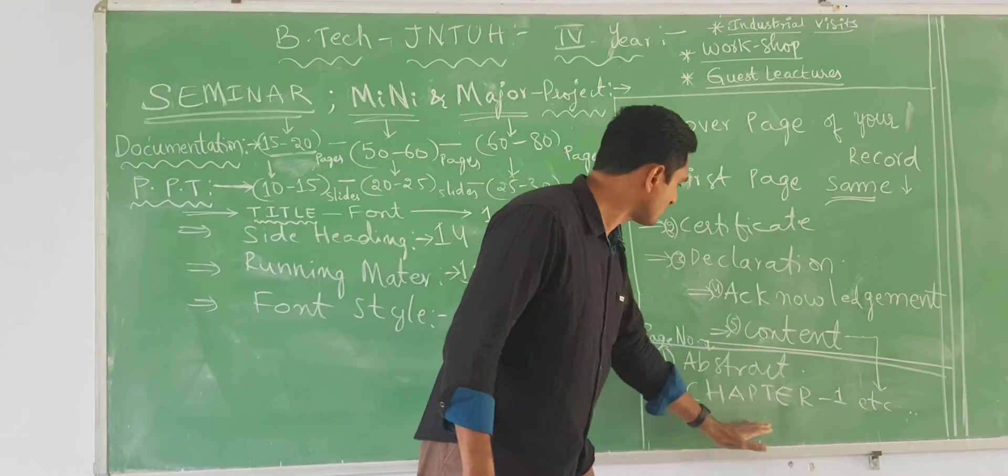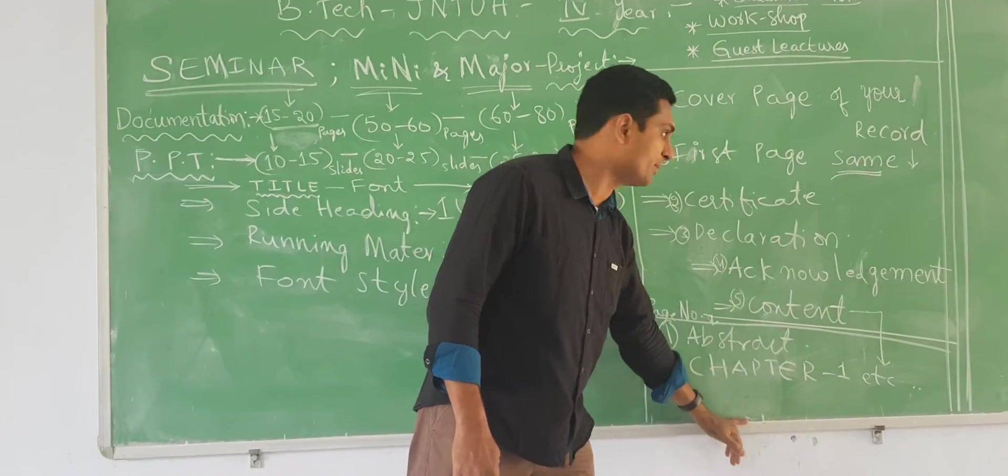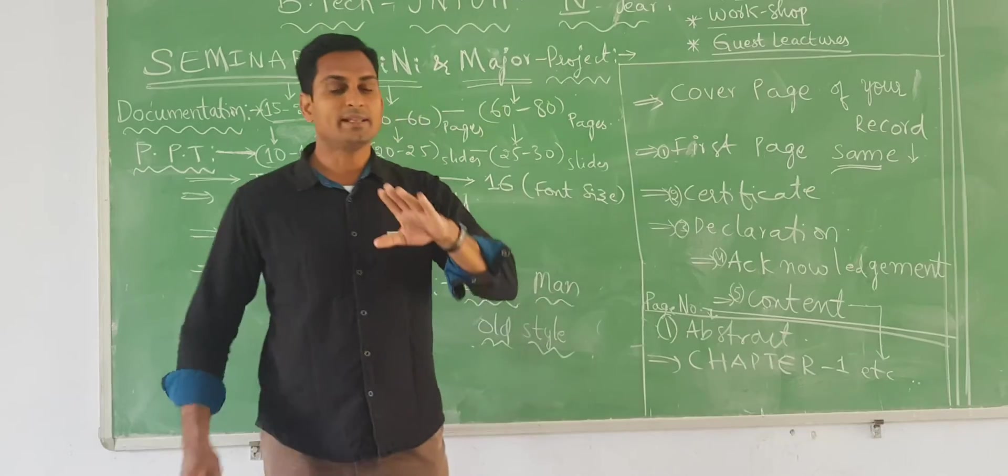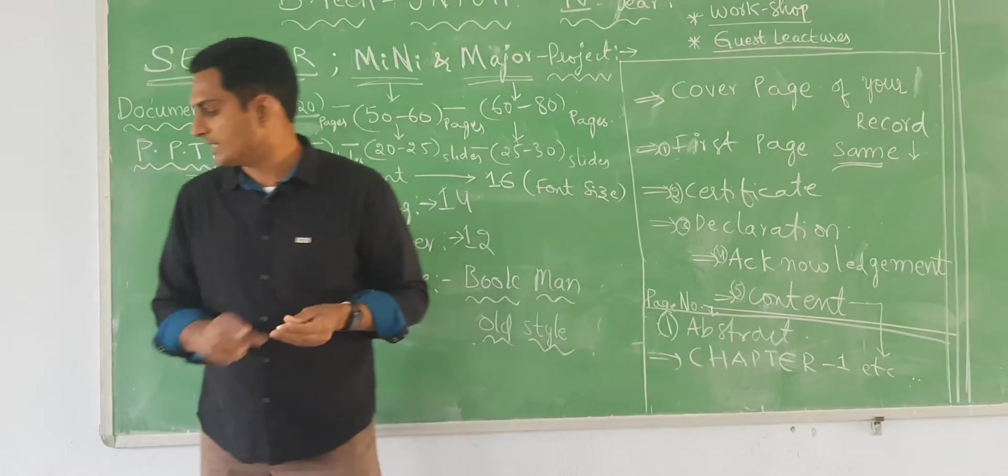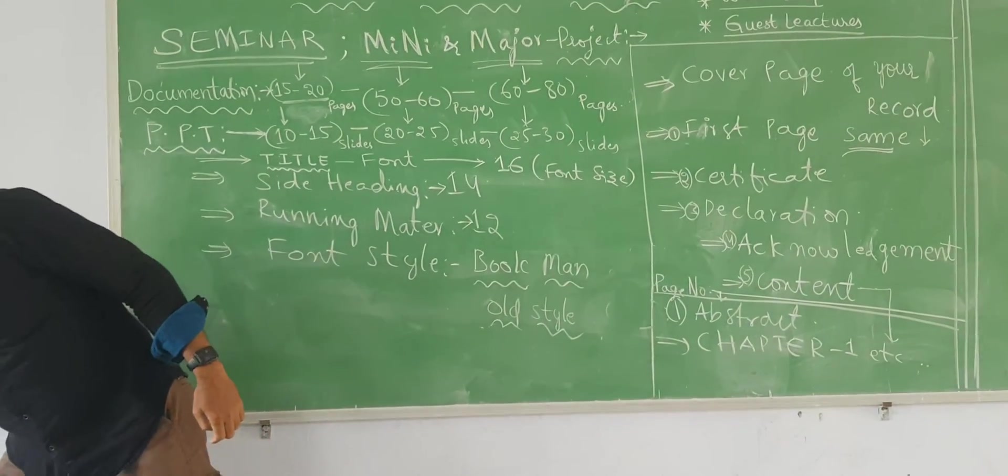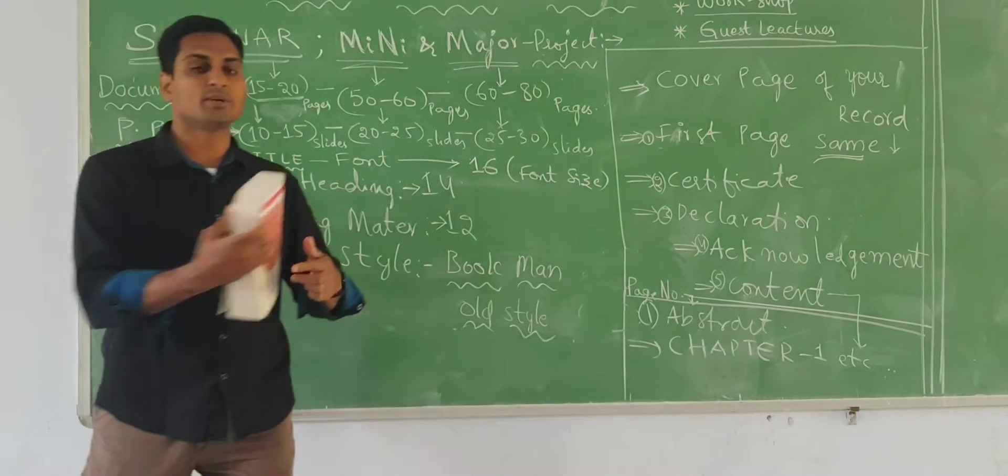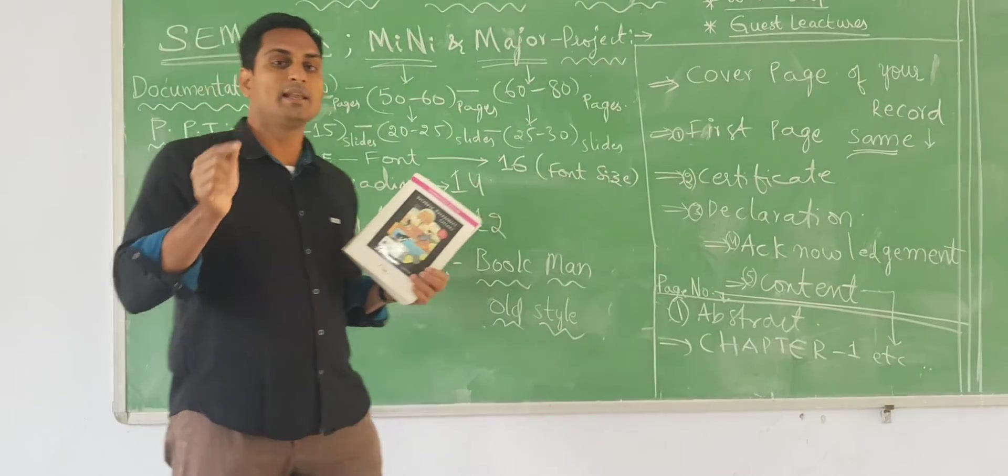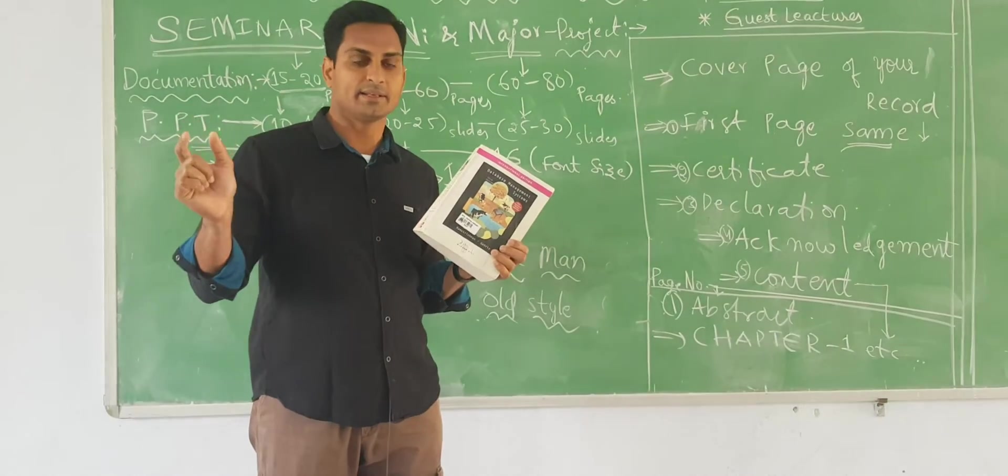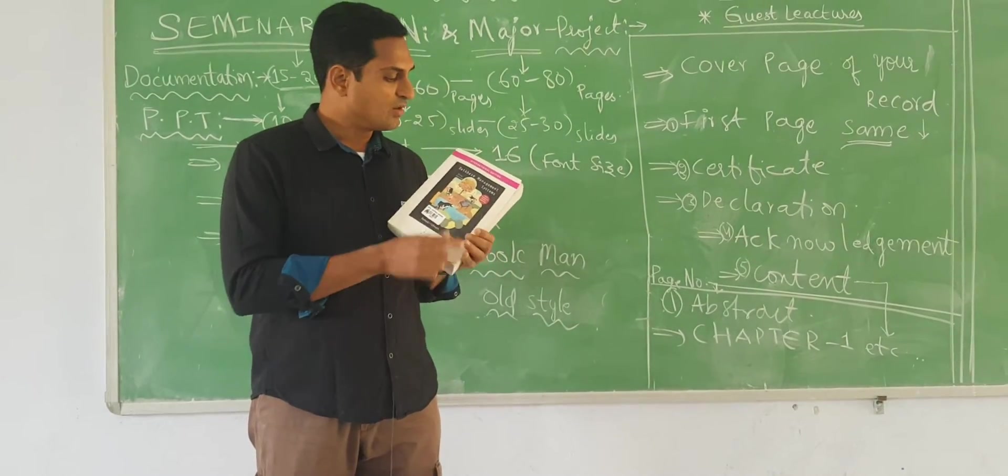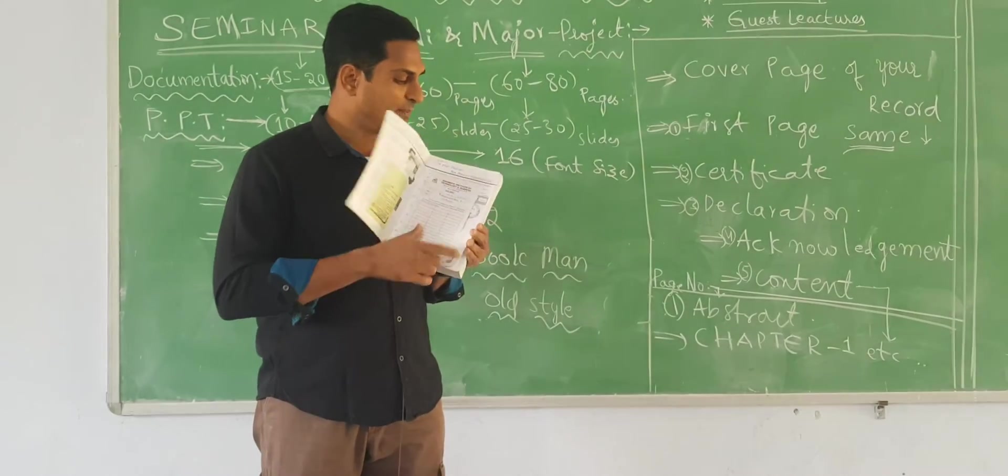Then we have abstract, chapter 1, chapter 2, remaining things will be followed. Just like in my previous video also I told you, just like any textbook. How a textbook is designed? The textbook is designed like IEEE, International Electrical and Electronic Engineering. That will be the format.